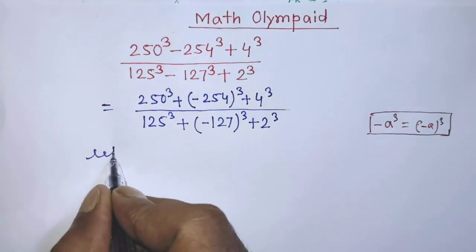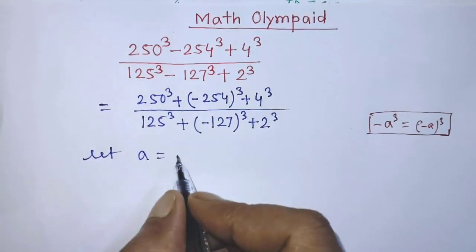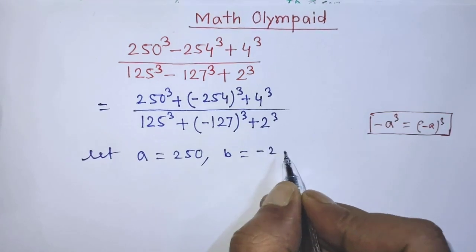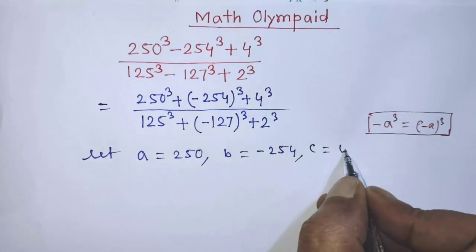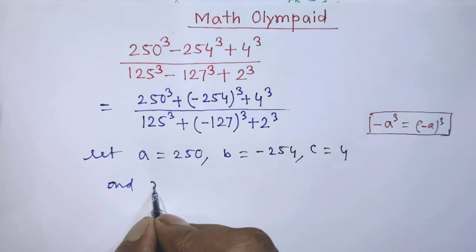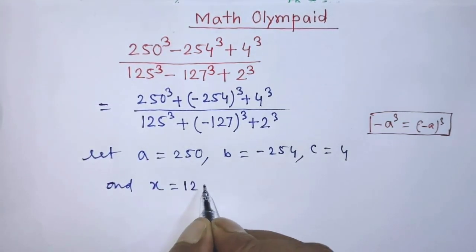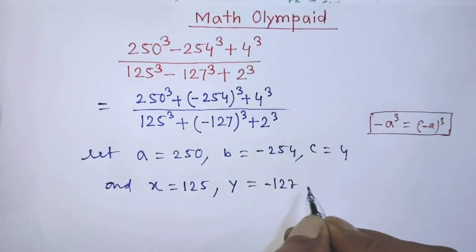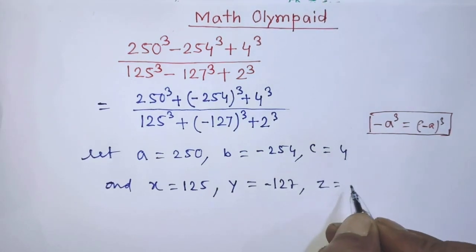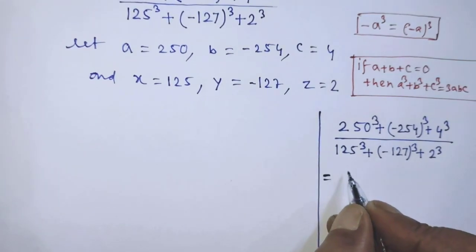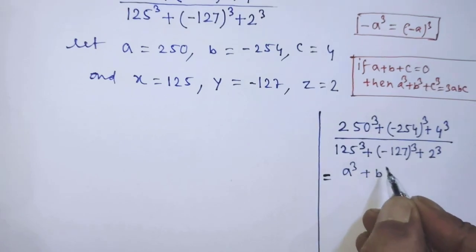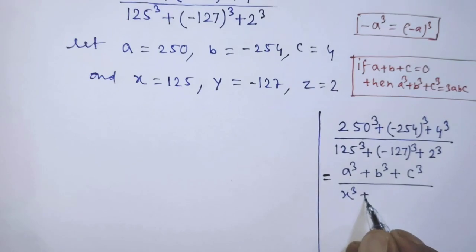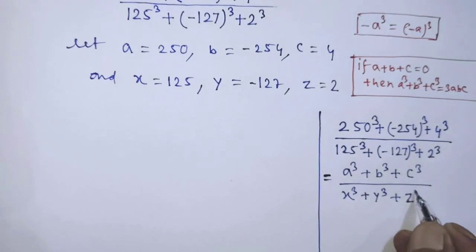So let A is equal to 250, B is equal to minus 254, and C is equal to 4. And X is equal to 125, Y is equal to minus 127, and Z is equal to 2. So it will be A to the power 3 plus B to the power 3 plus C to the power 3, over X to the power 3 plus Y to the power 3 plus Z to the power 3.